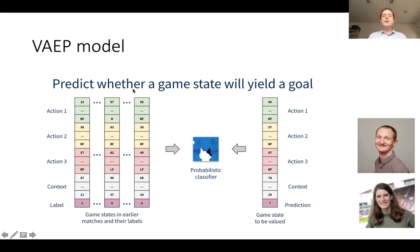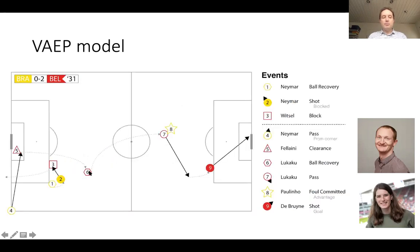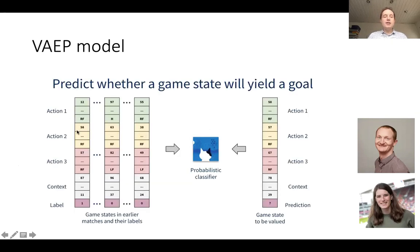Their key idea is that they predict whether a game state will yield a goal, for a group of three actions in a row within the possession chain. So this might be, for example, Lukaku receiving the ball, him running to a point, his pass, and De Bruyne receiving the ball — those would be the three actions in a row. For those three actions, they look at whether that results in a goal at the end: labeling one if it results in a goal and zero if it doesn't. So these three actions were inside a group of 10 actions which, within those 10 actions, led to a goal for the team.